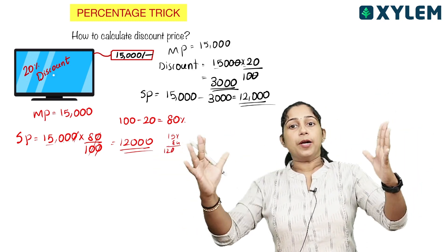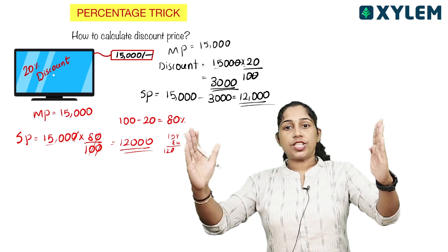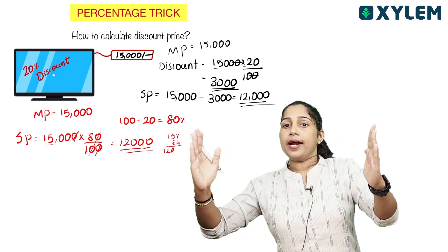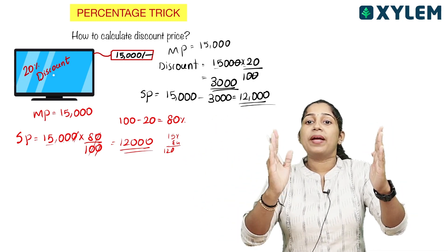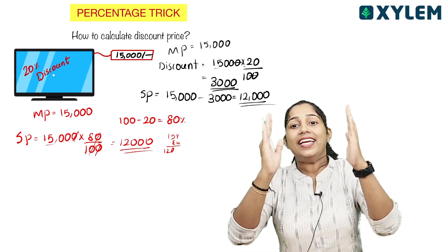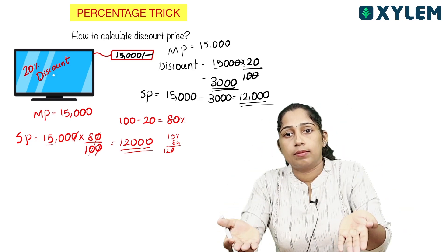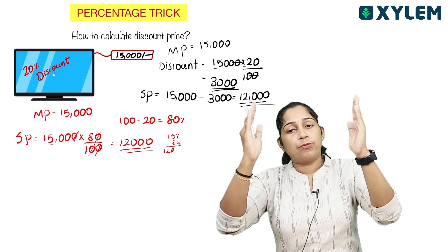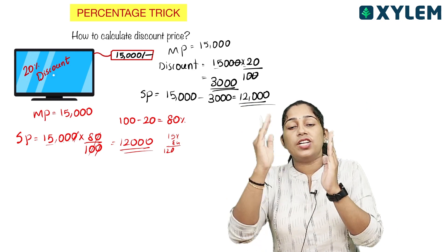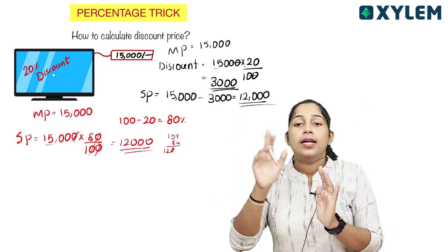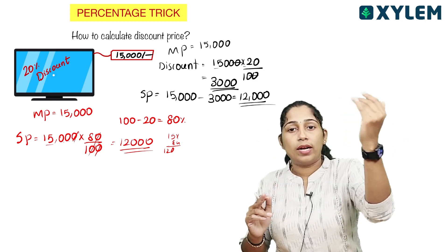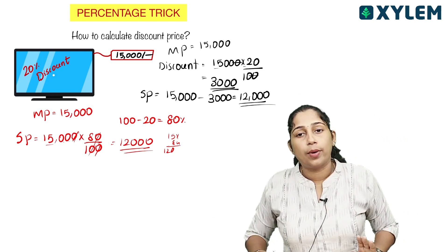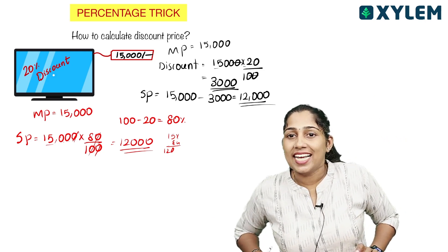15,000 is 100%. With a 20% reduction, that means 80% remains. So 15,000 × 80 divided by 100 gives the answer: 12,000. Within one step, you get the answer — easy!